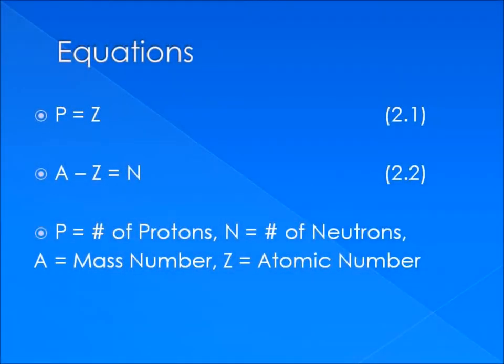What we've learned so far leads us to our first set of equations in this course. The first one, P equals Z, is equation 2.1, and A minus Z equals N is equation 2.2. I would recommend writing these down somewhere, as well as any other equations we stumble across. I would put them all on a separate piece of paper so that you're less likely to lose them in your notes.